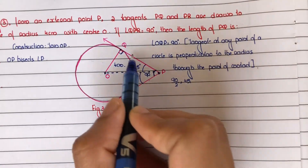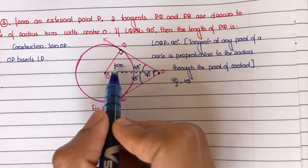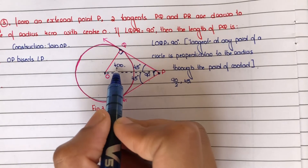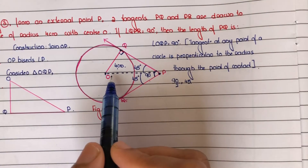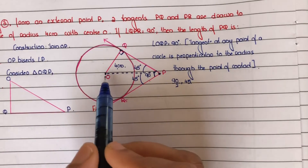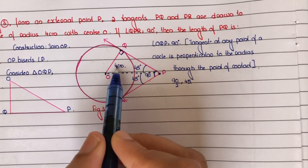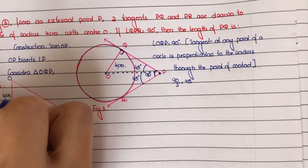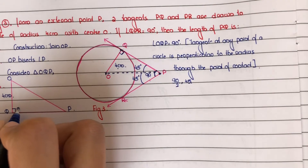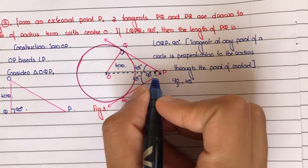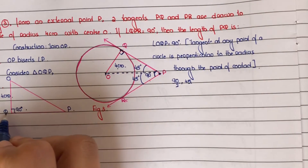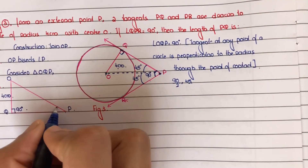Now consider triangle OQP. We need to find PQ. It is given that OQ equals 4 centimeter (radius of the circle), angle OQP equals 90 degrees, and angle QPO equals 45 degrees.